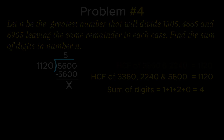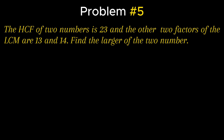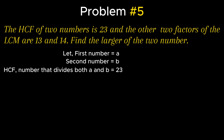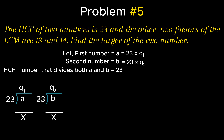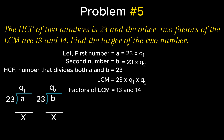Problem 5 states: the HCF of two numbers is 23 and the other two factors of the LCM are 13 and 14. Find the larger of the two numbers. Let the first number be a and the second number be b. Since the HCF equals 23, a can be expressed as 23 × q1 and b as 23 × q2. Since 14 is greater than 13, the larger number equals 23 × 14 = 322.